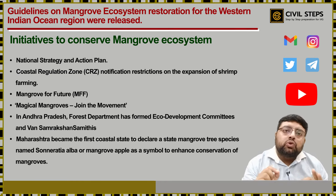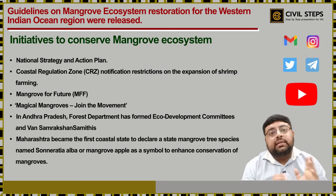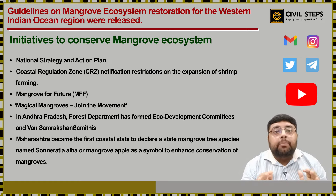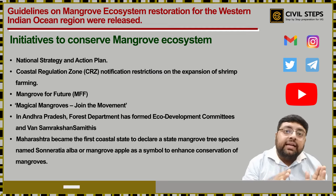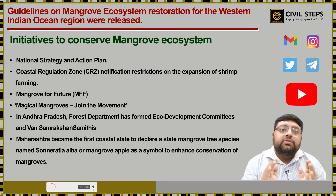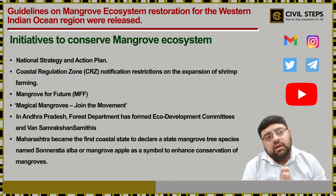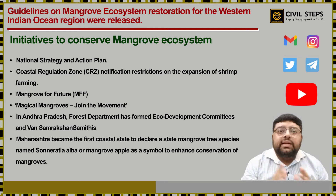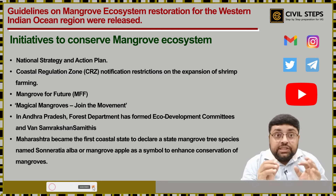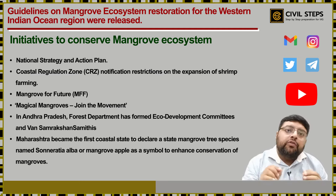The second initiative is the Coastal Regulation Zone notification under the Environment Act 1986, which declared all coastal stretches up to 500 meters from the high tide line as CRZ, which is very essential for conservation and sustainable management of mangrove forests. Third, the Ministry of Environment, Forest and Climate Change put restrictions on the expansion of shrimp farming.